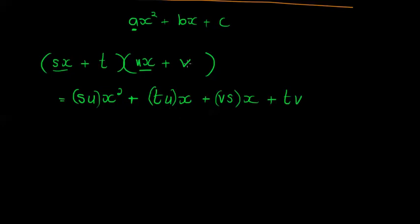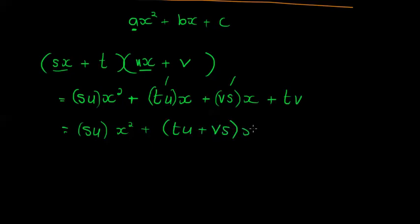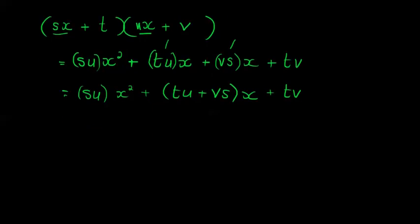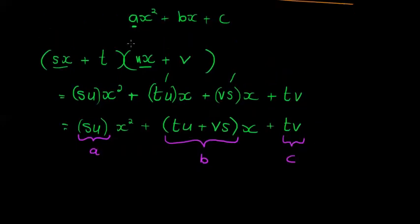Since t, u, s, and v are all numbers, t·u and s·v are both numbers, so I can add those two x-coefficients together. Adding it all out gives: su·x squared + (tu + vs)·x + tv. So here a equals su, b equals tu + vs, and c equals tv.